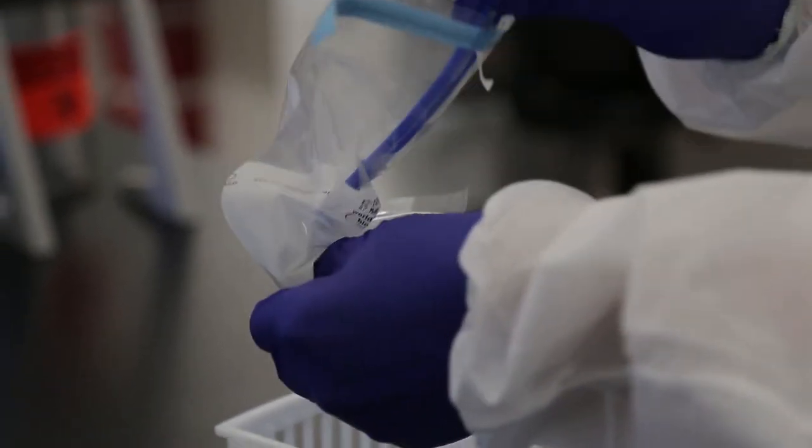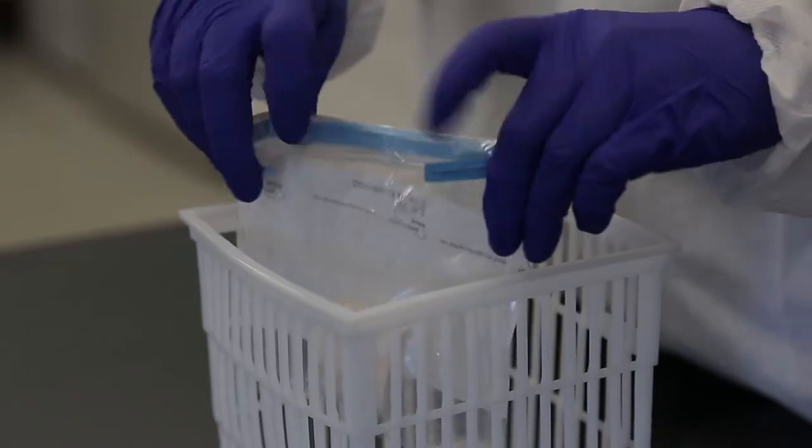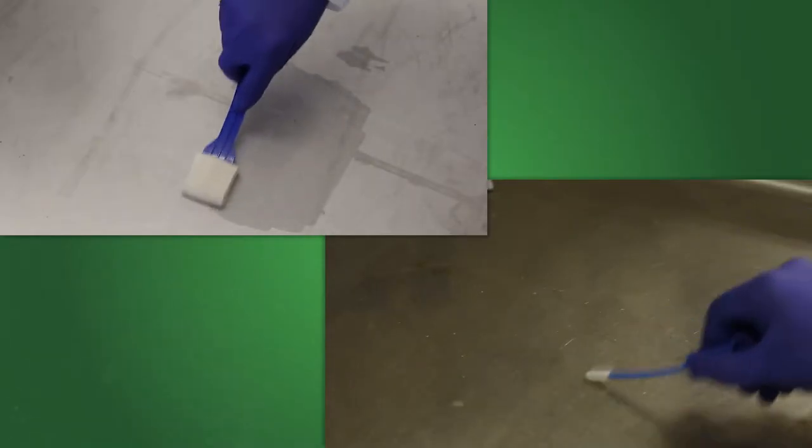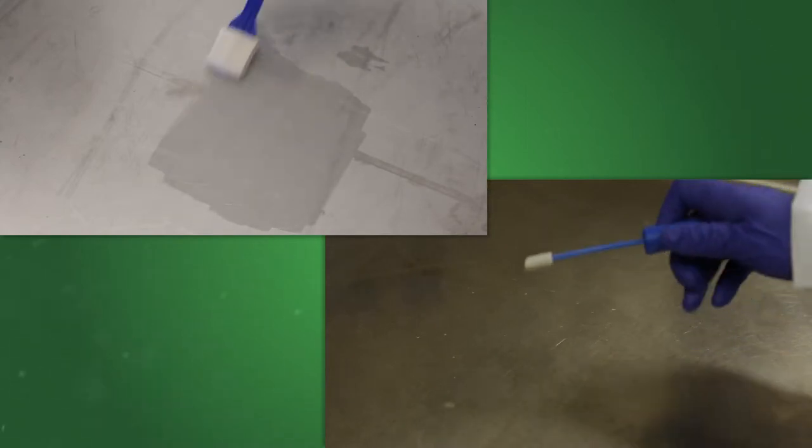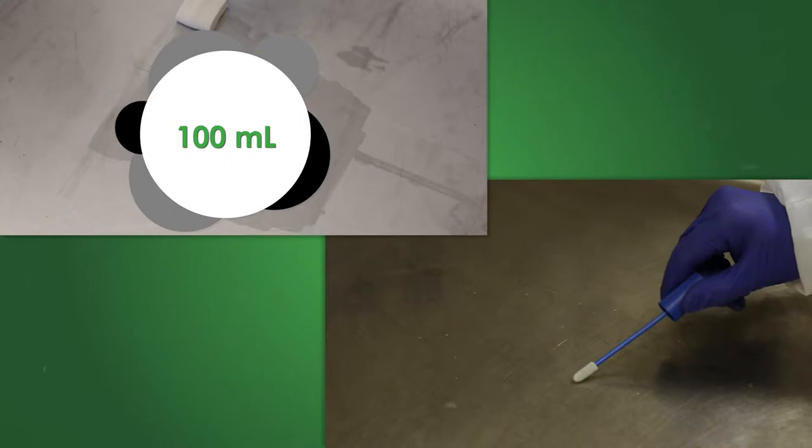Place the sample back into a sterile stomacher bag and close up as shown. Label the bag appropriately. Collect the rest of your environmental samples in the same manner. For sponges, 100 milliliters of media is recommended.